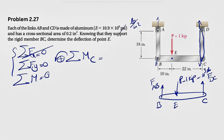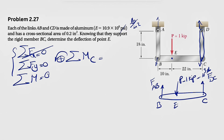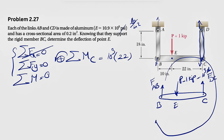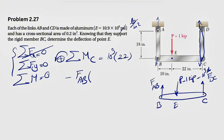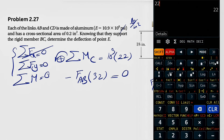Taking moments about point C, counterclockwise positive: the moment of force P is counterclockwise, so positive 1,000 times the distance from E to C, which is 22 inches. The moment of F_AB is clockwise, so negative F_AB times the distance from B to C, which is 32 inches, equals zero. Solving, F_AB = 22,000 / 32 = 687.5 pounds.